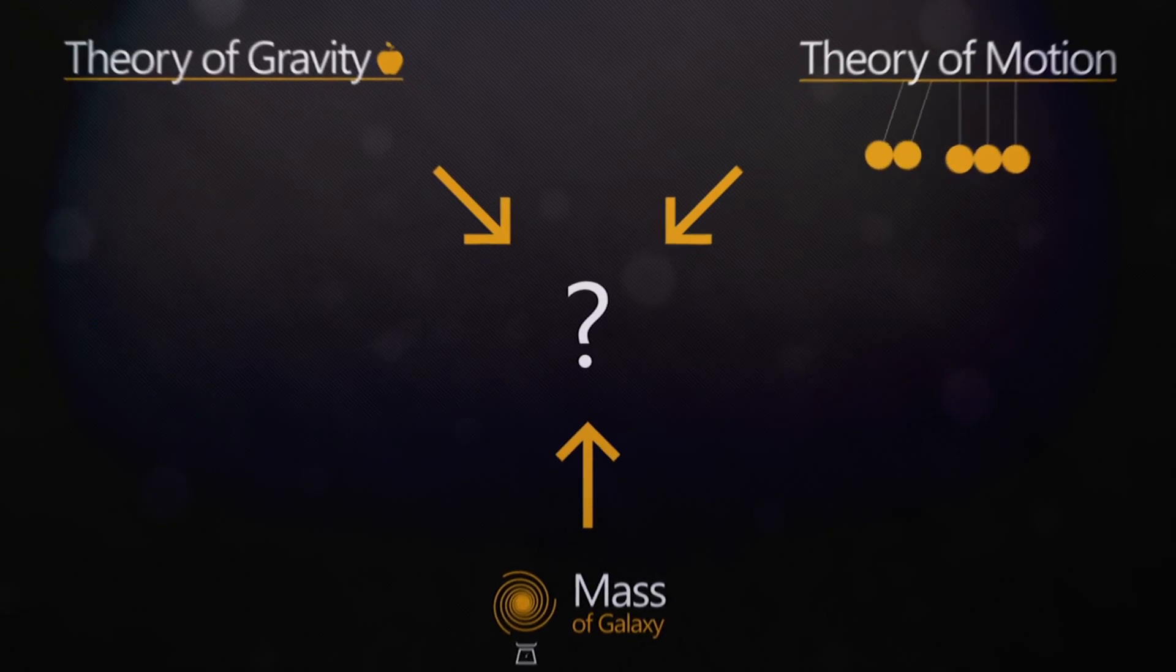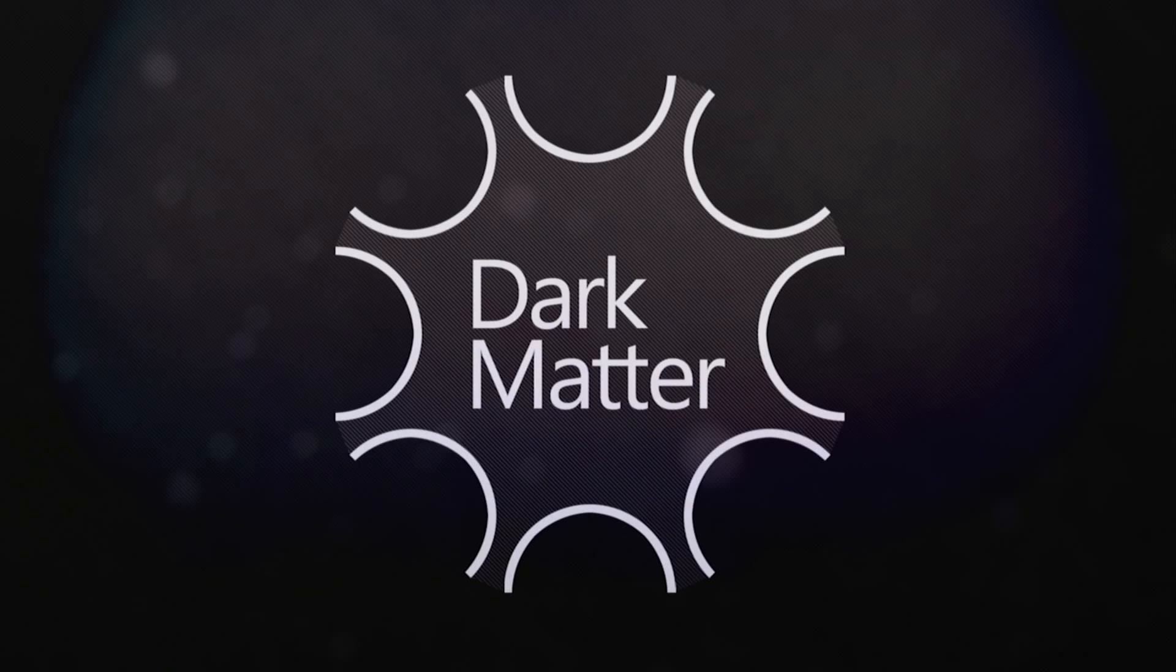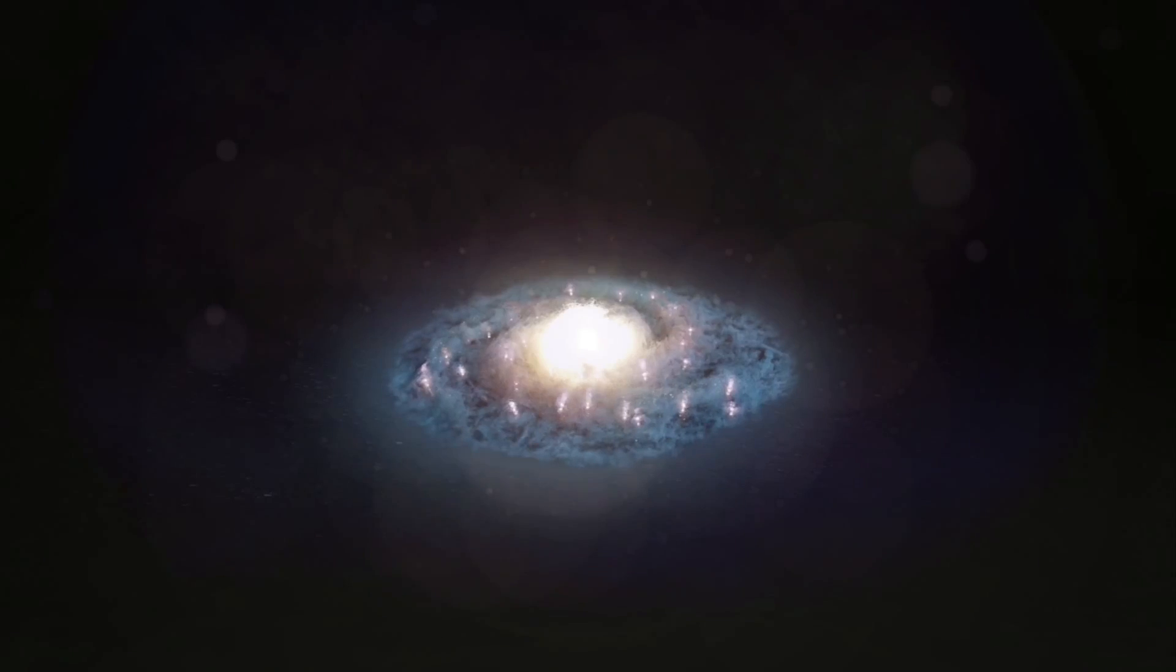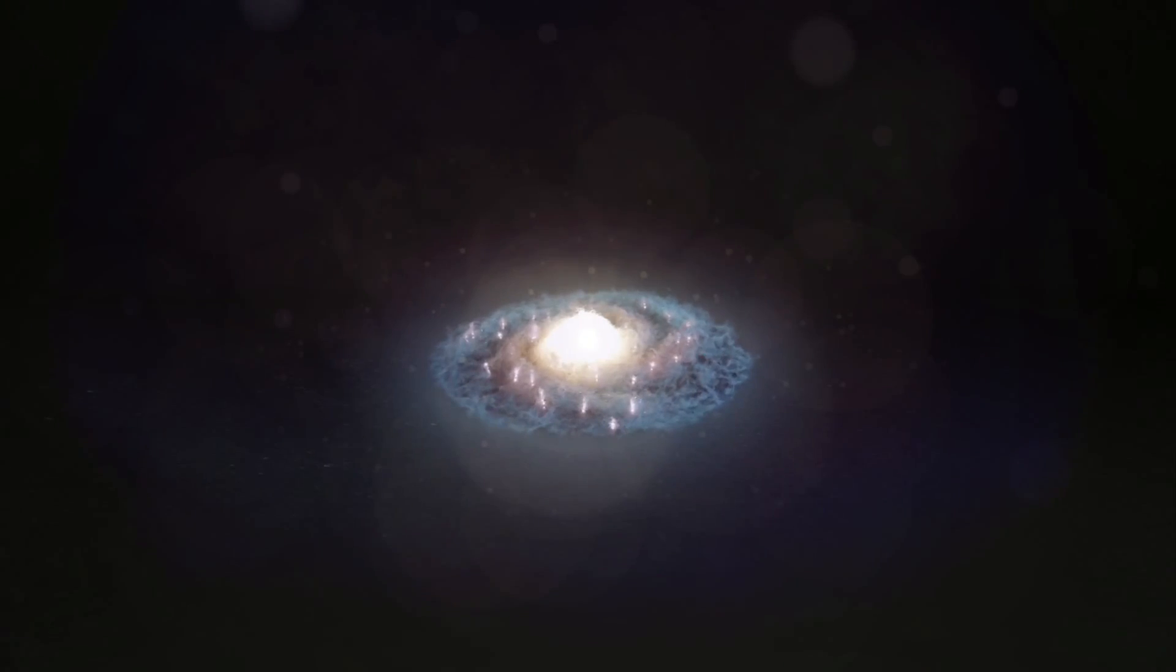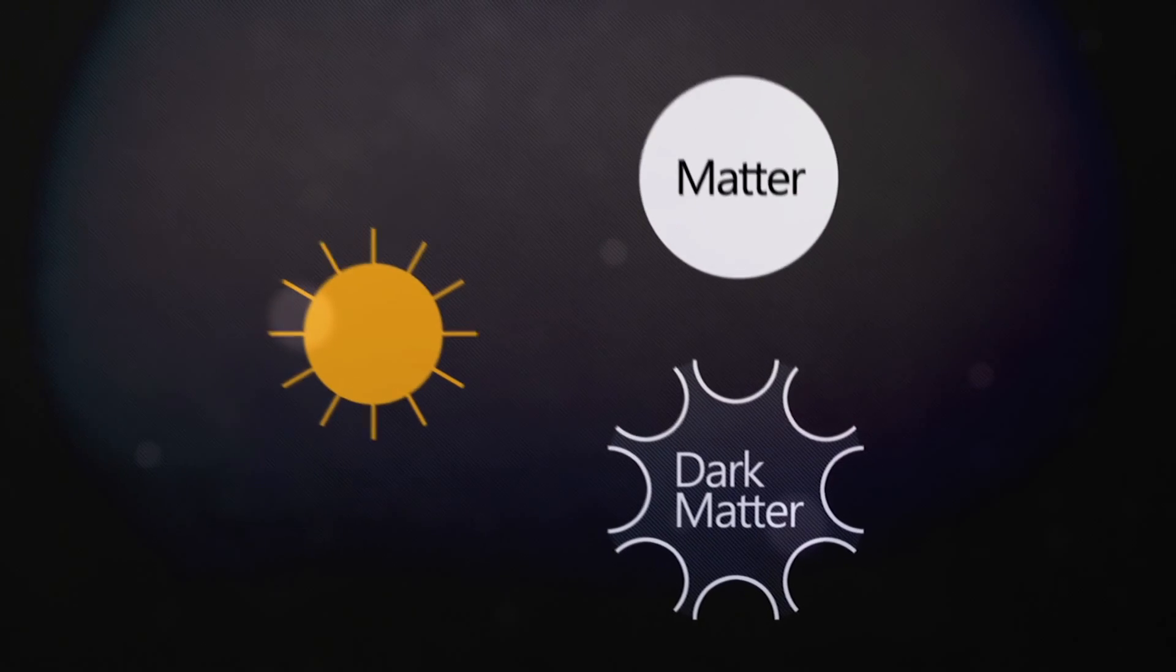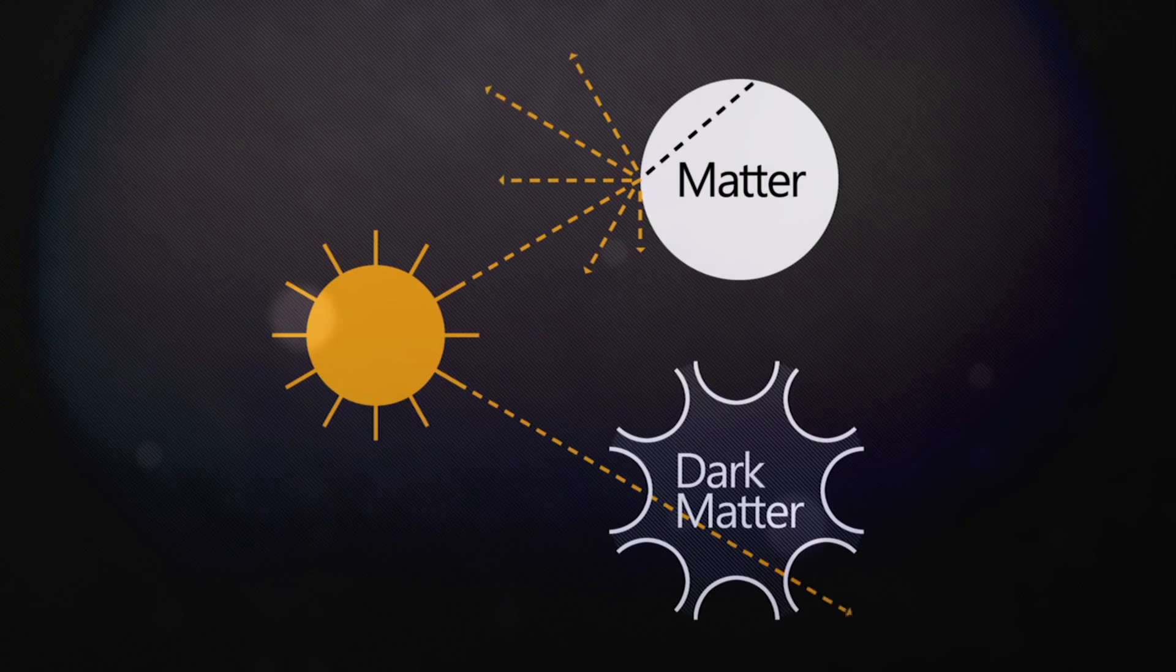Today, scientists believe that the answer lies in a previously unknown kind of matter called dark matter. This dark matter can be envisioned as a cloud which surrounds most galaxies. This matter is very unusual. It is affected by gravity, but it is invisible to visible light and all other forms of electromagnetic radiation. The name dark matter originates in this form of matter's inability to emit or absorb light.